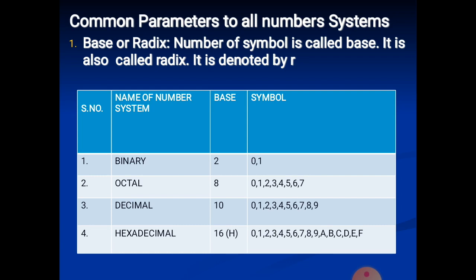For example, all persons know decimal number. So we talk about decimal number. If we write the symbols starting from 0, for decimal number it goes from 0 to 9. So the total number of symbols is 10. If the number of symbols is 10, that means base is 10 — R's value here is 10.